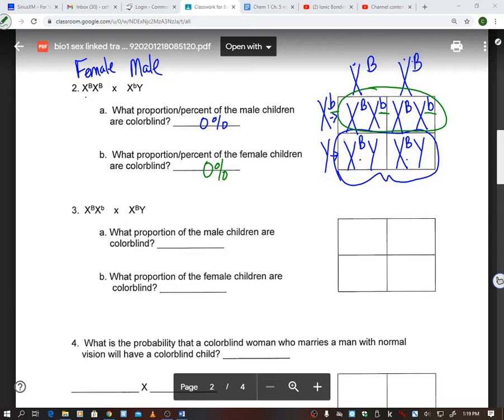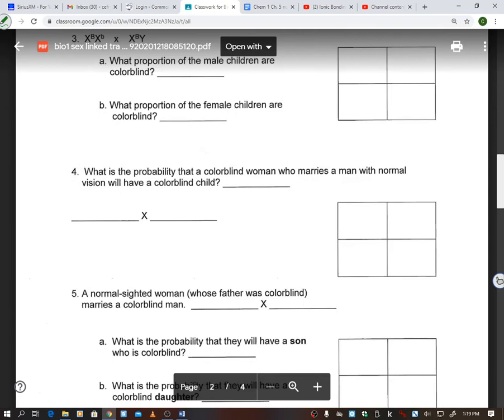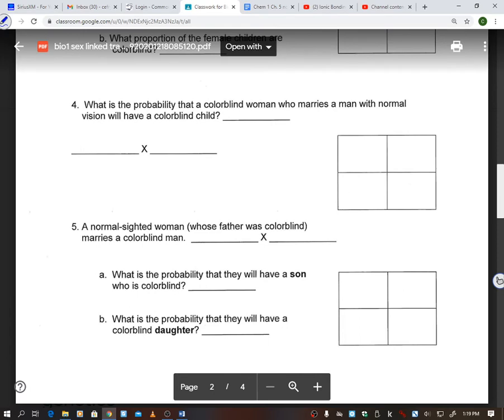So then I'm going to let you guys do number three. I'm not going to talk too much about it. I'll let you guys try out number three. And then let's look at number four. Number four says, what is the probability that a colorblind woman who marries a man with a normal vision will have a colorblind child? So first I need to fill in my parents. I'm going to do mom, and I'm going to do dad.